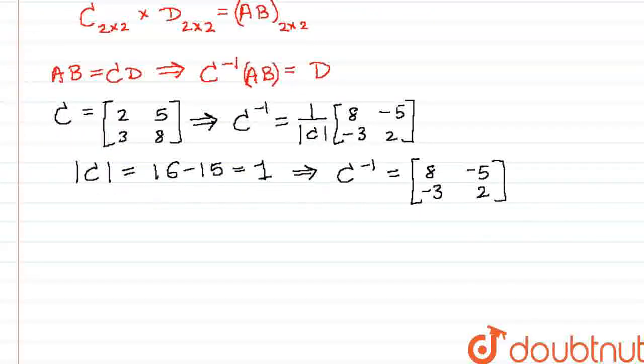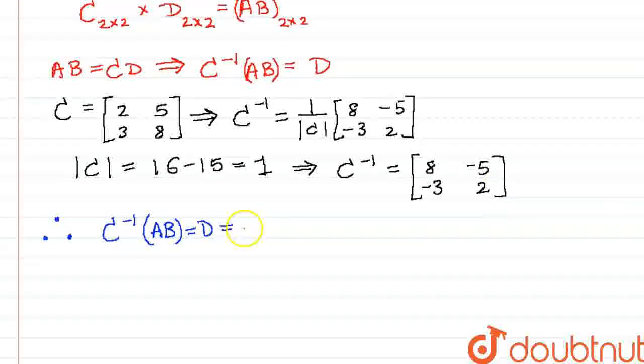Now, let us continue by finding D. We know that C inverse times AB is equal to D. So, that will be equal to 8, negative 5, negative 3, 2, times 3, 4,